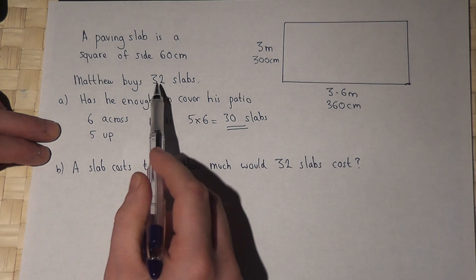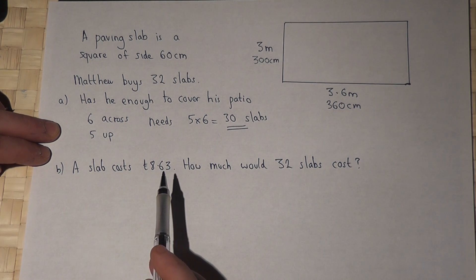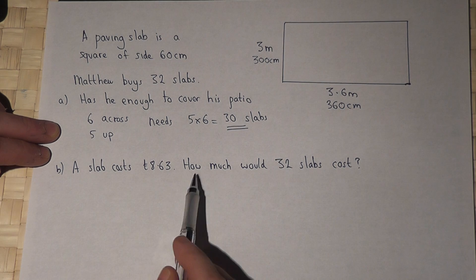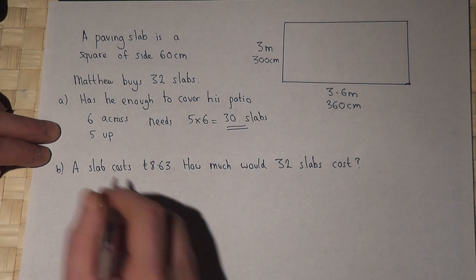Now, he's bought 32, and each of the slabs costs £8.63. And the question is, how much would it cost to buy 32 slabs at this price?